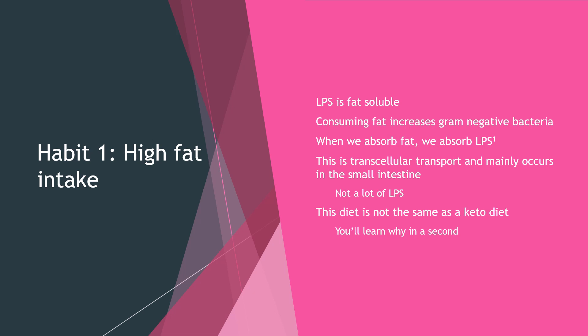There's not a lot of LPS in the small intestine, so this is much less consequential than leaky gut in the large intestine where all the LPS is. However, if we consume a chronic high-fat diet, this will increase gram-negative bacteria in our small intestine and can also increase small intestinal bacterial overgrowth, progressively making us better at increasing LPS absorption. Note: this diet is not the same as a keto diet — that is completely separate.